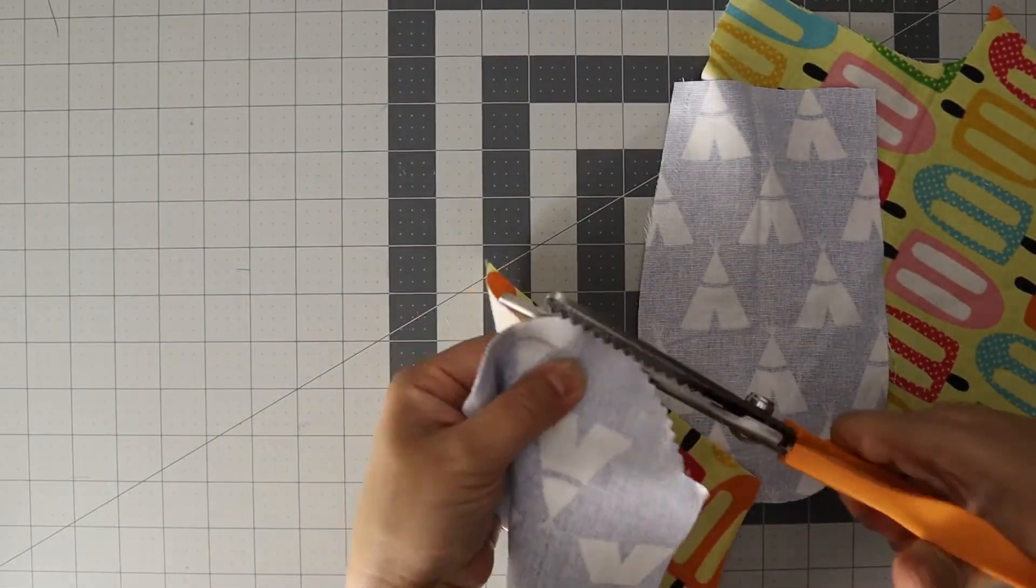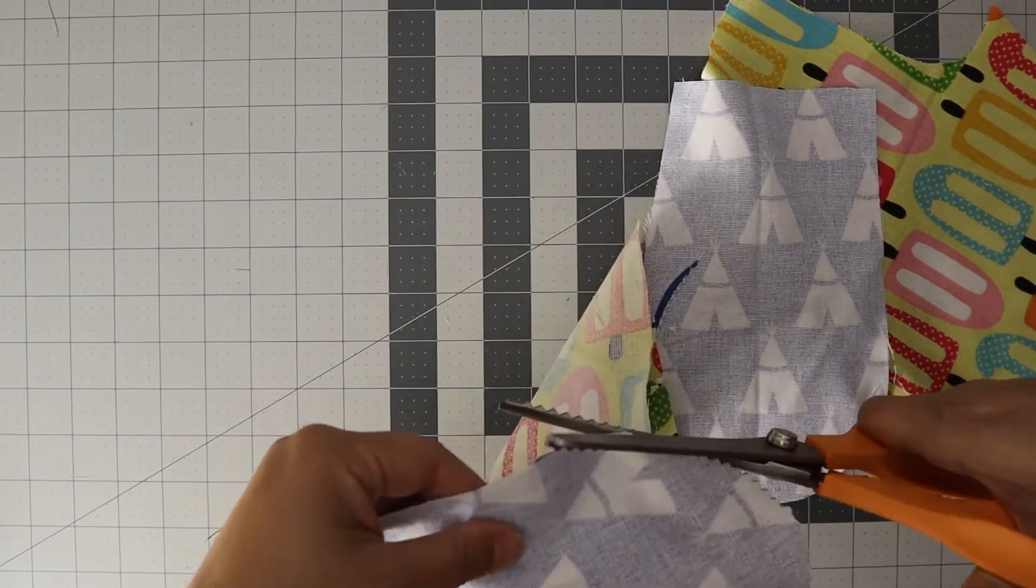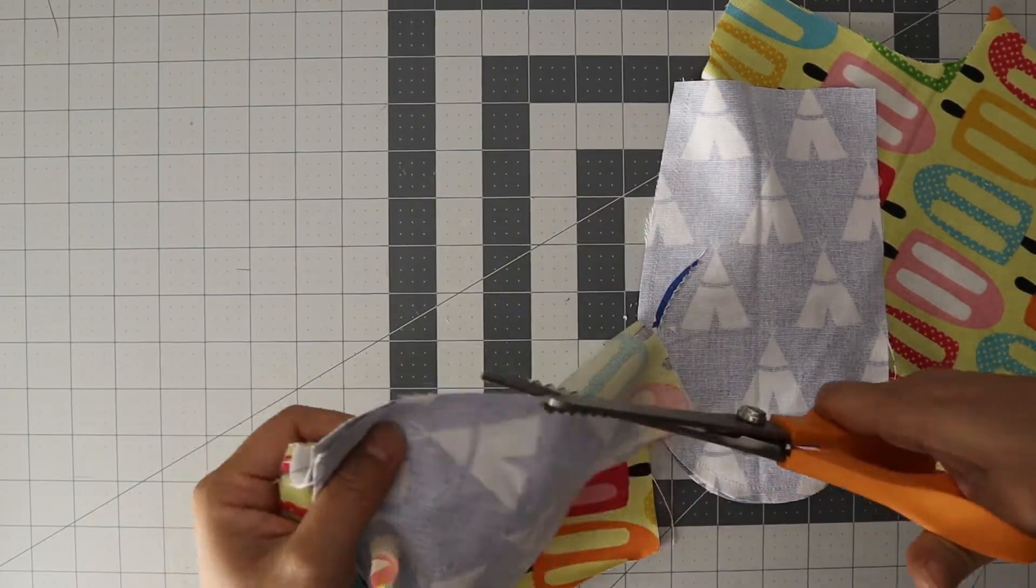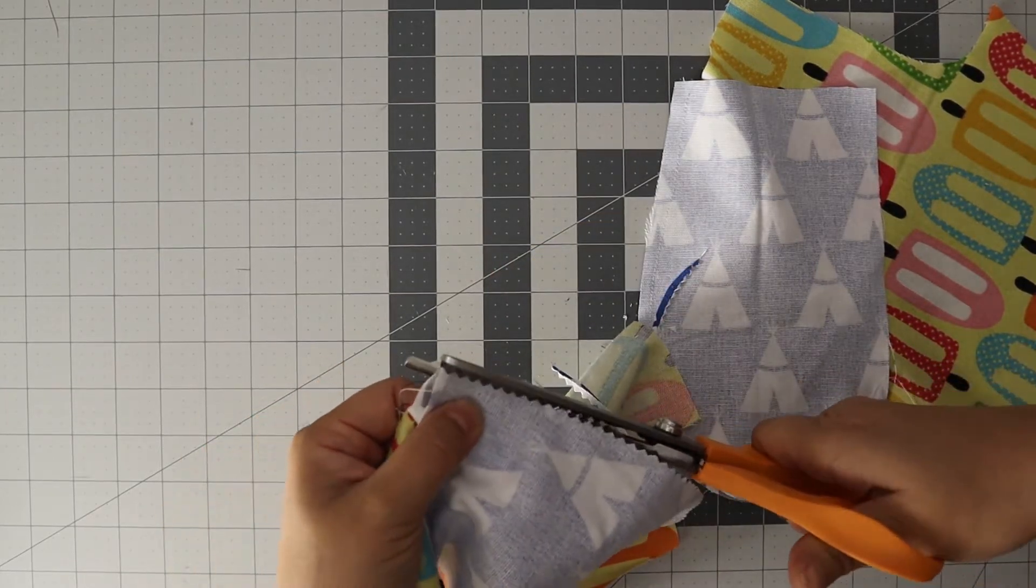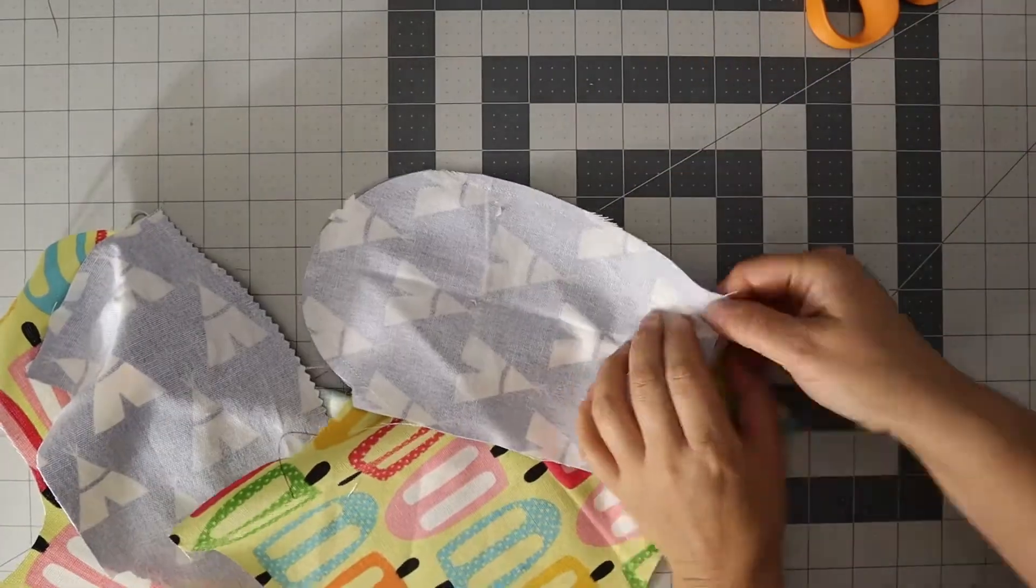Now we're going to finish, pink the edges, or if you have a serger go ahead and serge the seam. You might also want to press and top stitch the curve for the pocket.